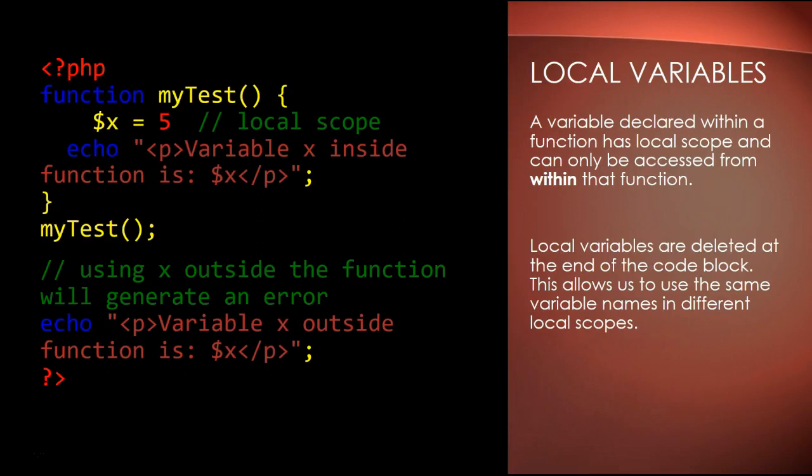Local variables are declared within a function, have local scope, and can only be accessed from within that function. This variable here is declared within the brackets of this function and so it is accessible when it is called here. Now if you call the same function outside of those brackets, then the variable will not function and it will produce an error.